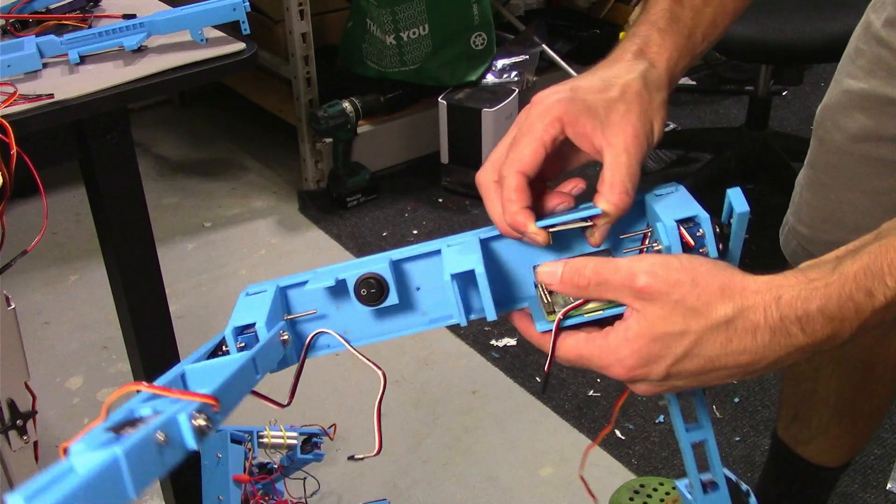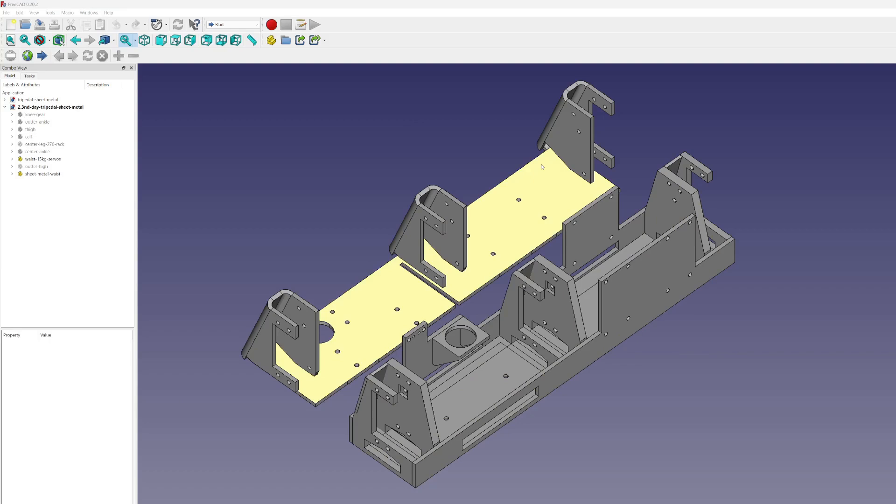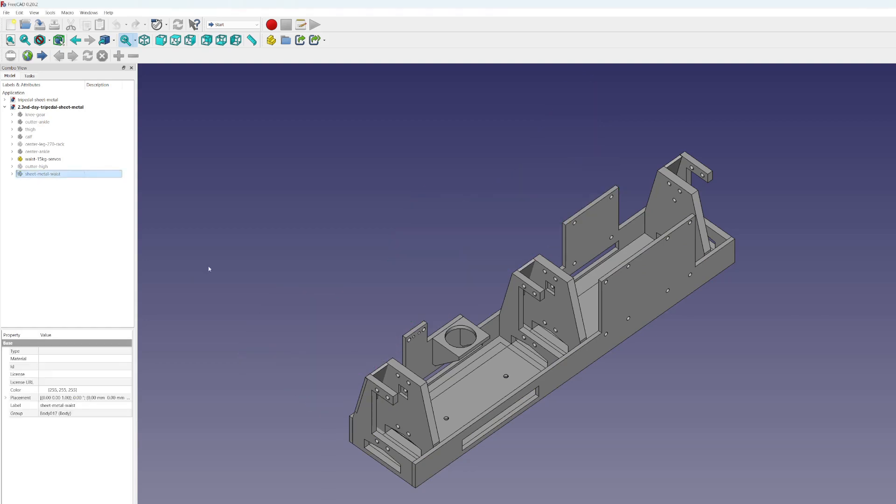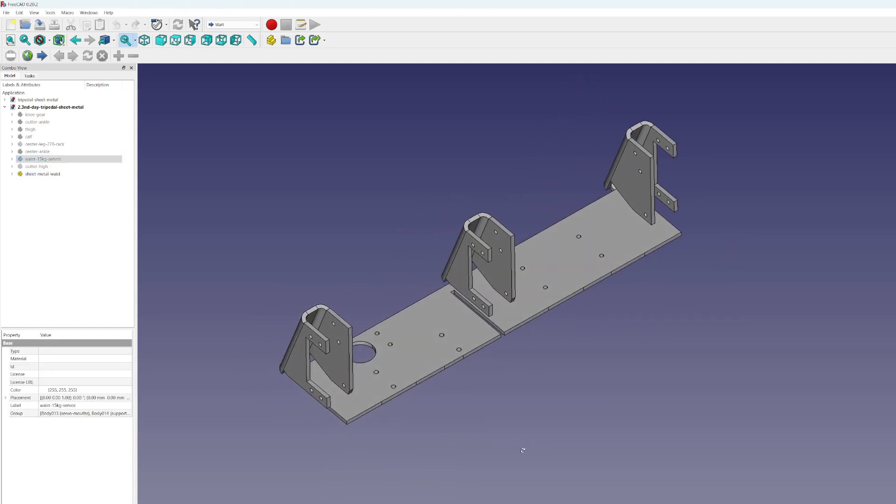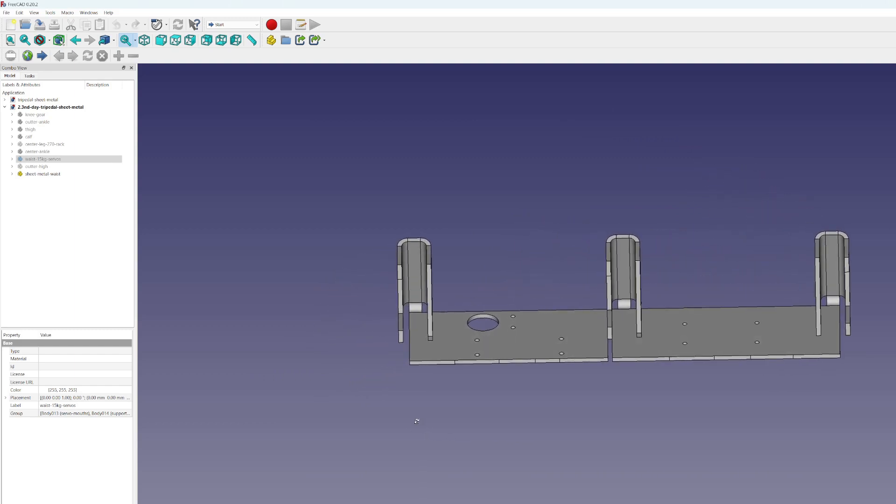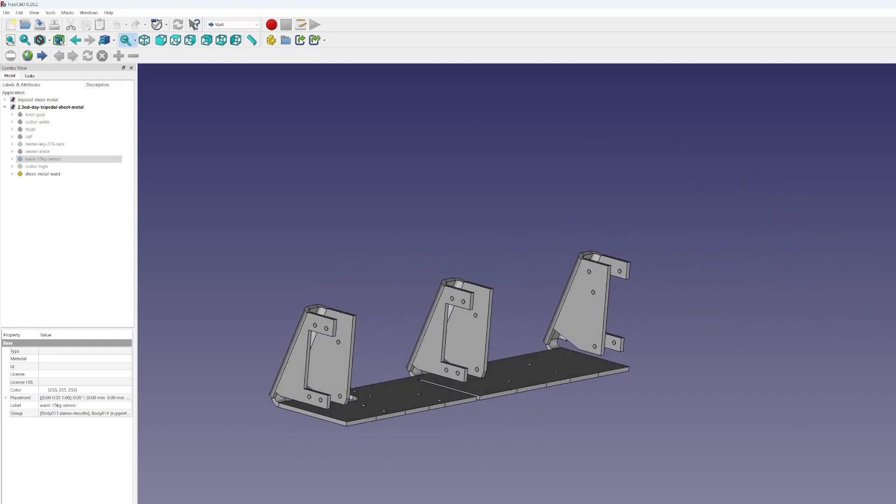My biggest takeaway from this project is you should 3D print your sheet metal parts before you order them. Even though the 3D printed plastic is too thin to withstand working loads, you can still fit everything together and make sure your parts are perfect before you order them. Don't forget to like and subscribe. Hacker twins out.